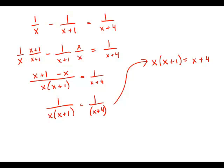So multiplying things out, x squared plus x equals x plus 4. Subtract x from both sides. We get x squared equals 4.